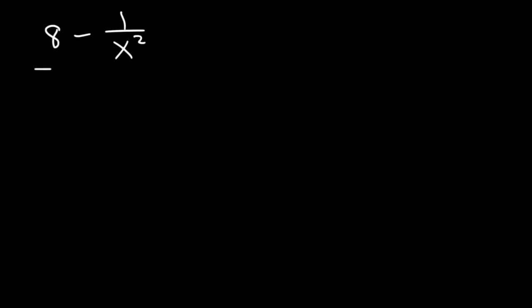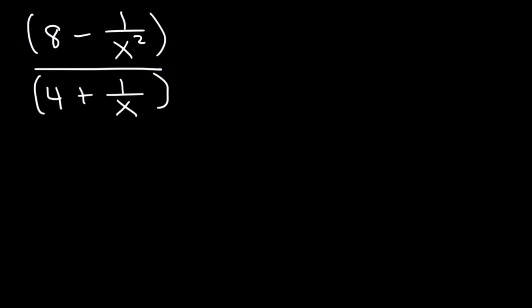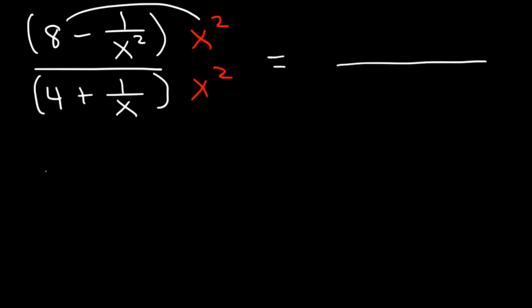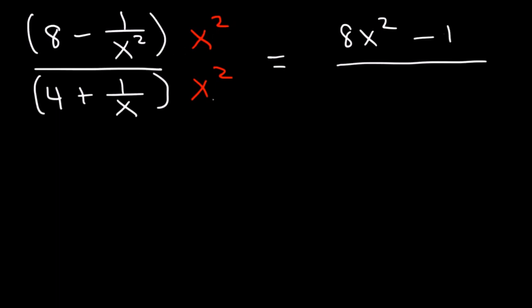Let's try this one: 8 minus 1 over x squared divided by 4 plus 1 over x. What should we multiply the top and the bottom of this fraction by? We need to multiply it by x squared. x squared will cancel 1 over x squared and 1 over x at the same time. So 8 times x squared is 8x squared. And 1 over x squared times x squared — these two will cancel — leaving behind 1. And then we're going to have 4x squared, and 1 over x times x squared is simply x. And so that's the answer.